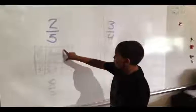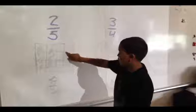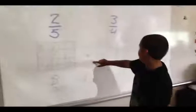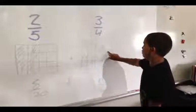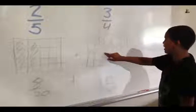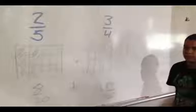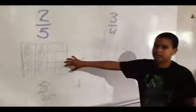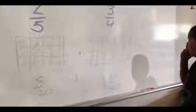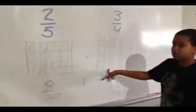How does your picture represent 2 fifths? Can you explain your left picture? You have to do 5 lines, and then you have to do the 2 lines, so you colored in 2 because it's 2 fifths. For the 3 fourths, you make 4 lines, then 3 lines going down, and then you color in the part that you shade. But there are a lot of little boxes there — how did you make those? Because you have to try and make these 2 look the same. So you crisscrossed them? Yes.